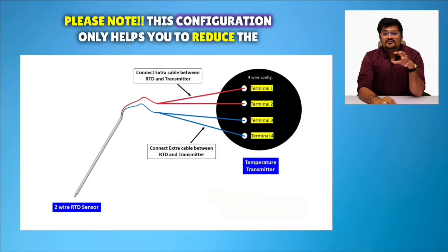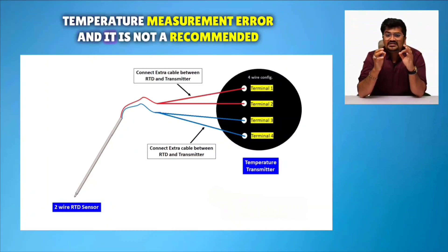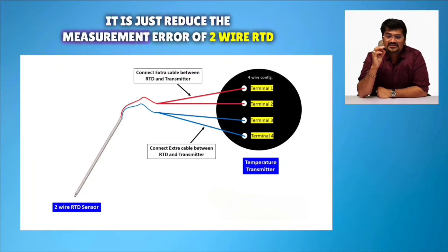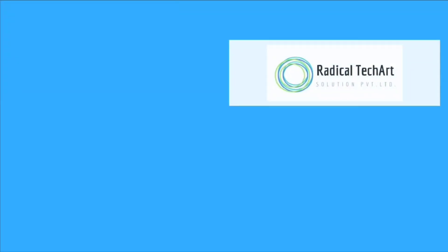Please note, this configuration only helps you to reduce the temperature measurement error. And it is not a recommended method to replace the 4-wire RTD sensor. It just reduces the measurement error of 2-wire RTD.